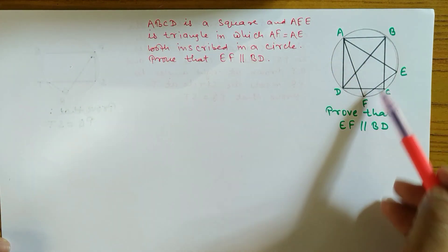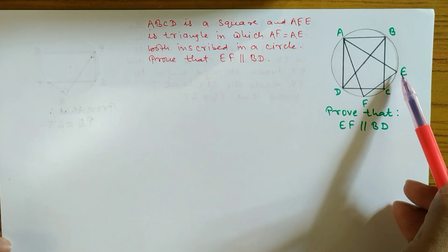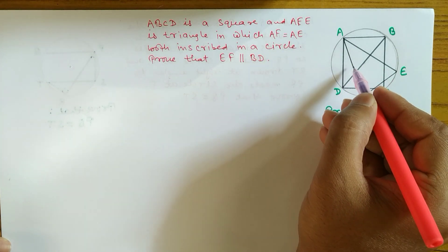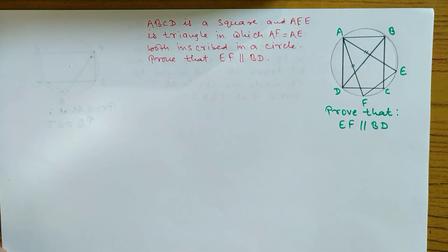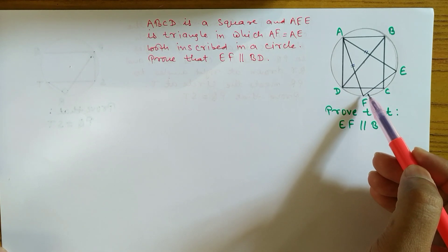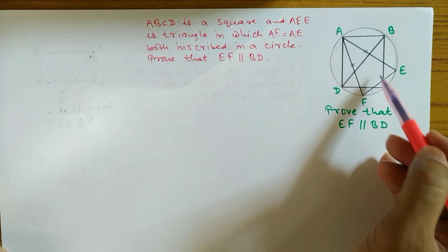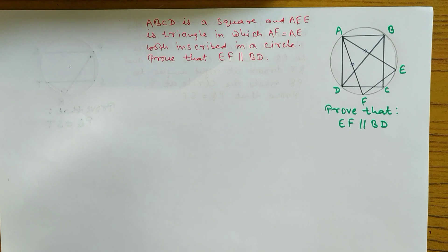ABCD is a square and AFE is a triangle in which AF and AE are equal, as given. Both are inscribed in a circle. We have to prove that EF is parallel to BD. To show that two lines are parallel, we focus on alternate angles, corresponding angles, or co-interior angles.